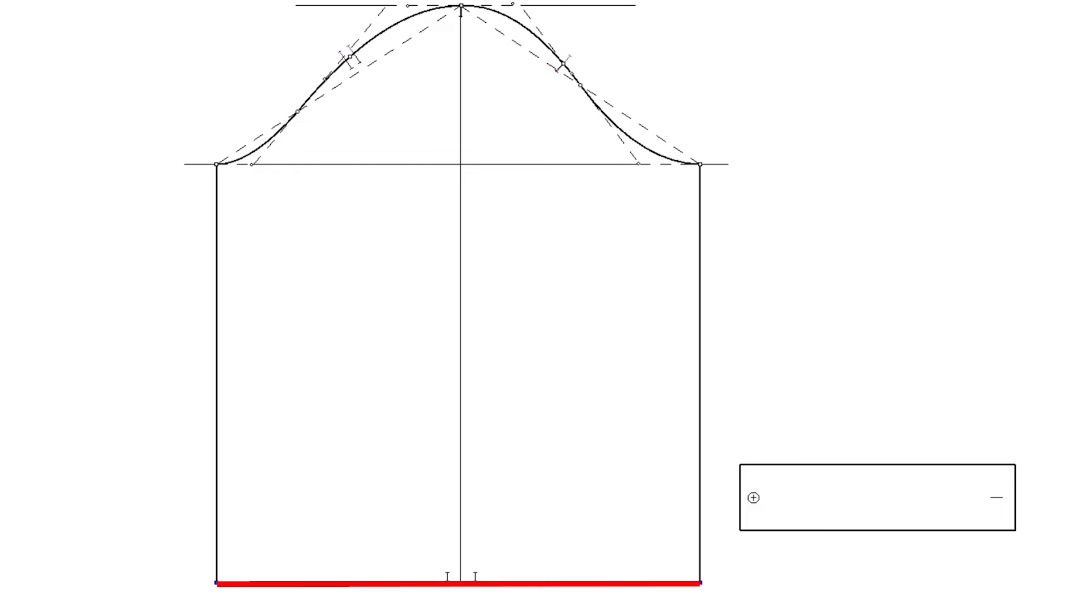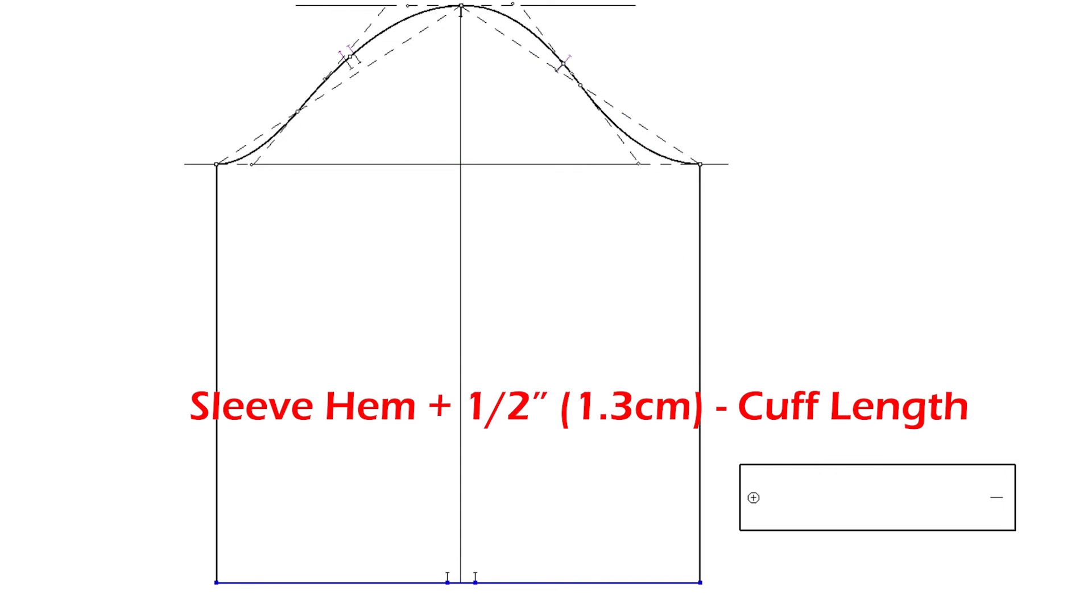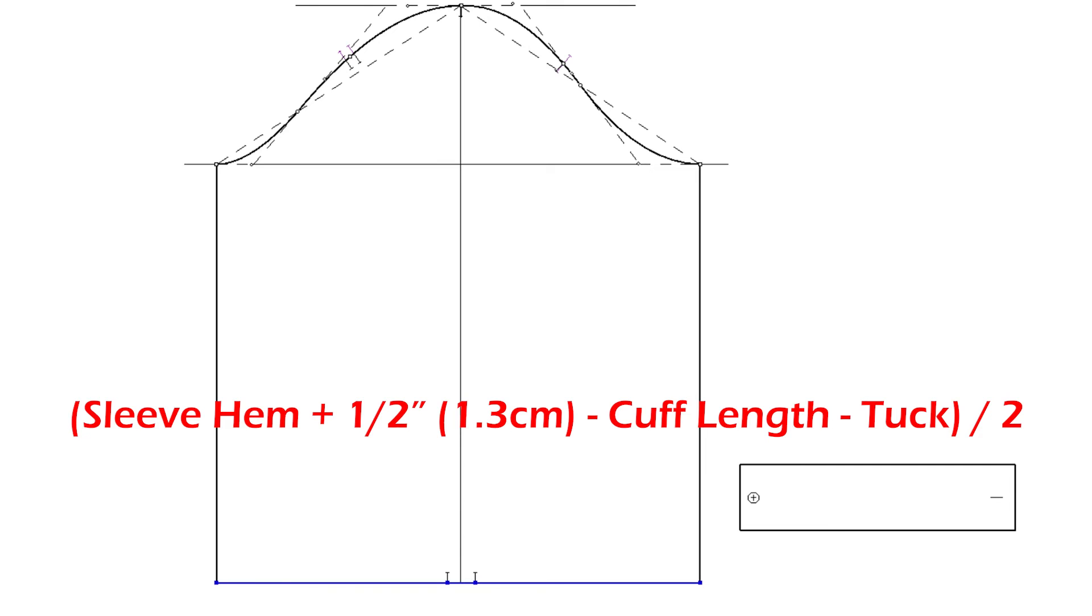So, measure the sleeve hem and add half of an inch, because when you attach the placket later, it will be added half of an inch. So, your total sleeve hem you measured plus half of an inch, minus ten inch and a half the cuff length, then you know how much you want to reduce. But, we already reduced one inch by making a tuck, so minus one inch. That's the final amount we want to reduce. Divide it by two and take it out from both sides.